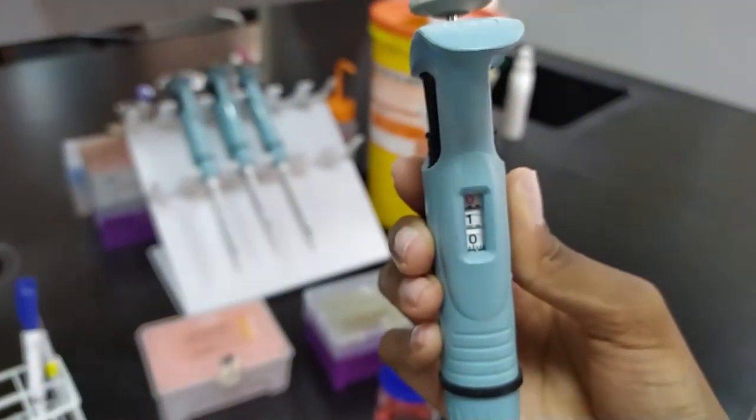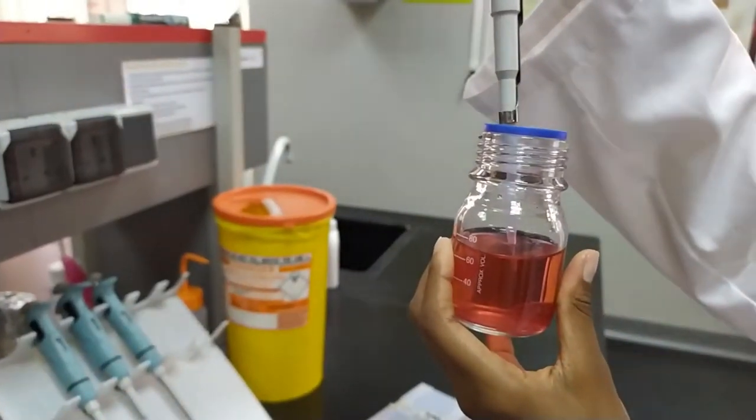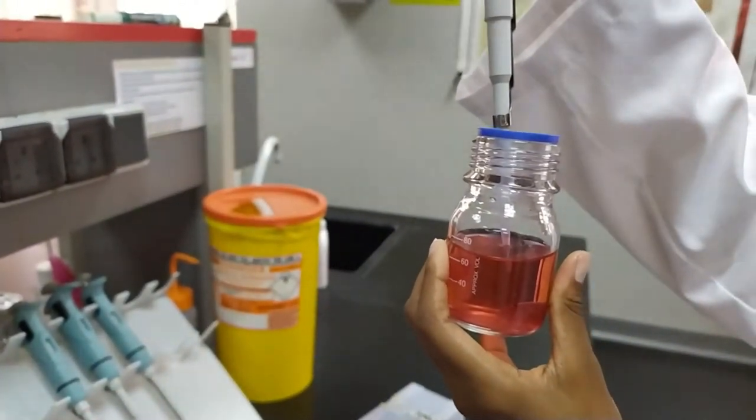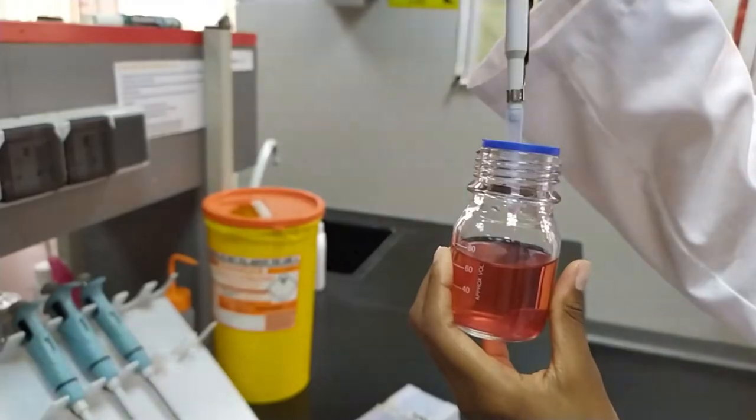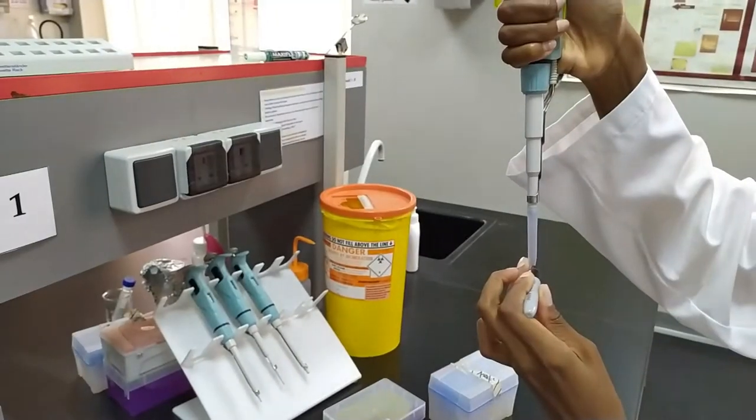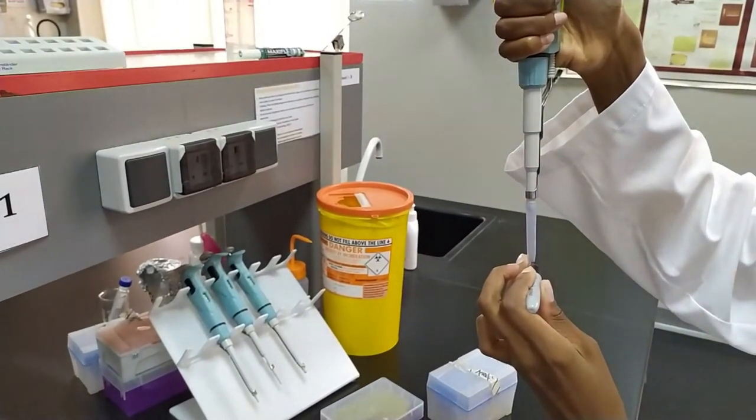She's then going to properly take up 100 microliters to show what that's supposed to look like. And she's going to mark it with a sharpie to indicate where the level should be.